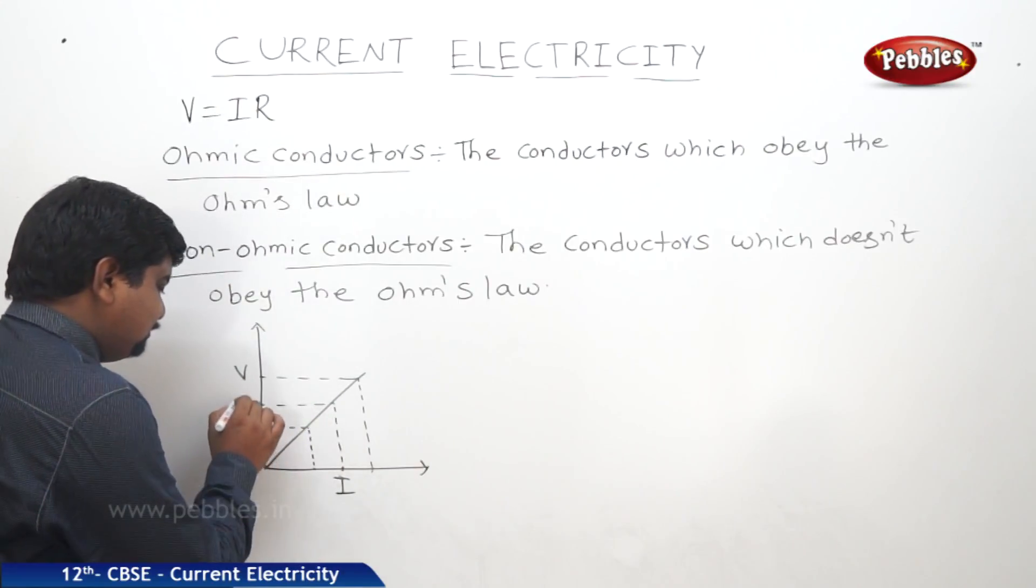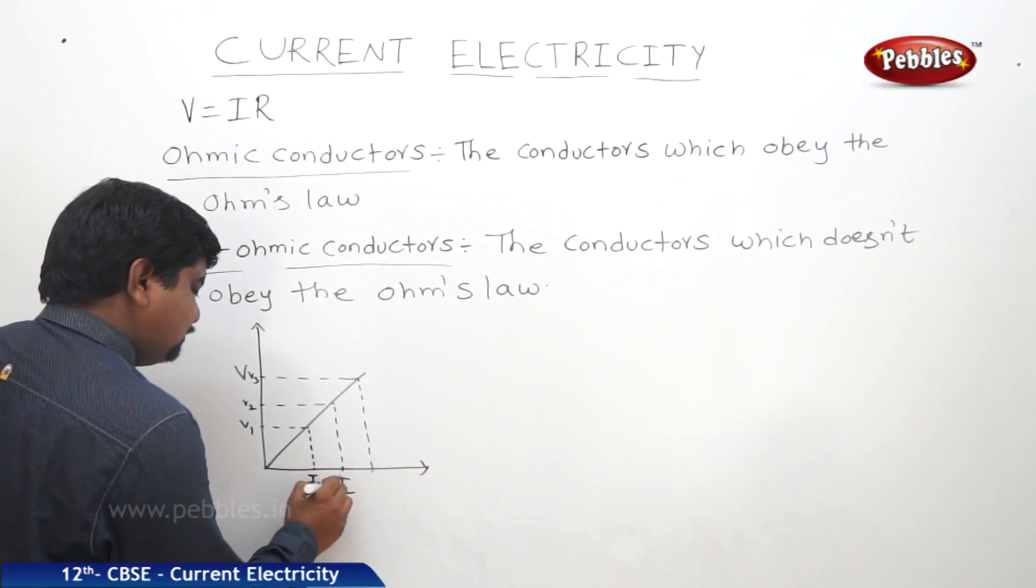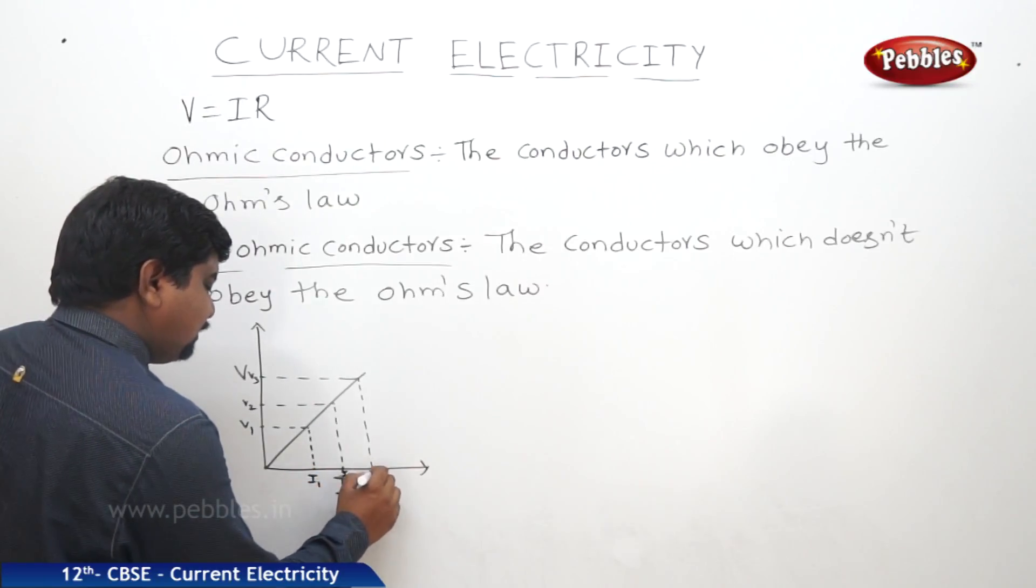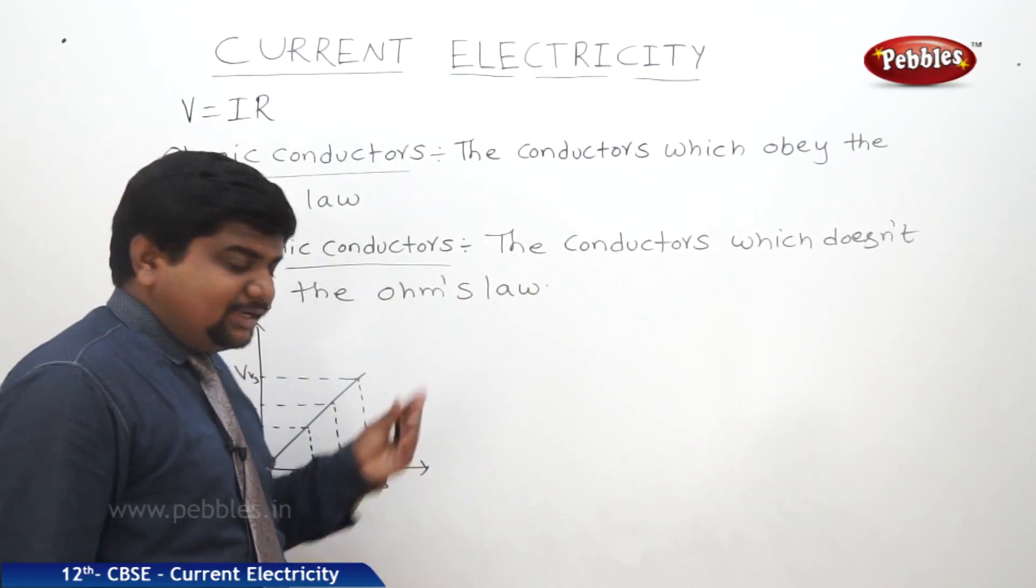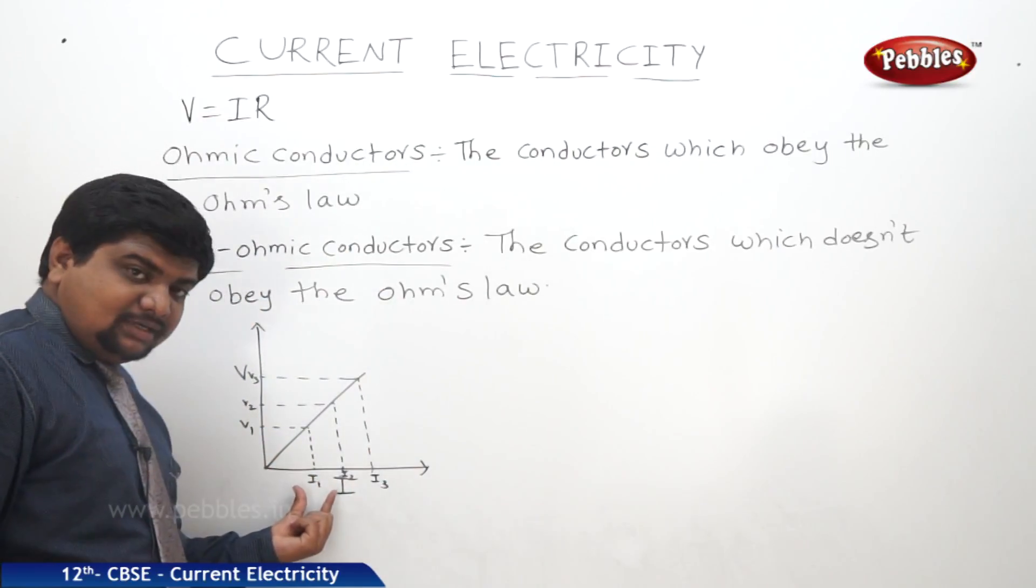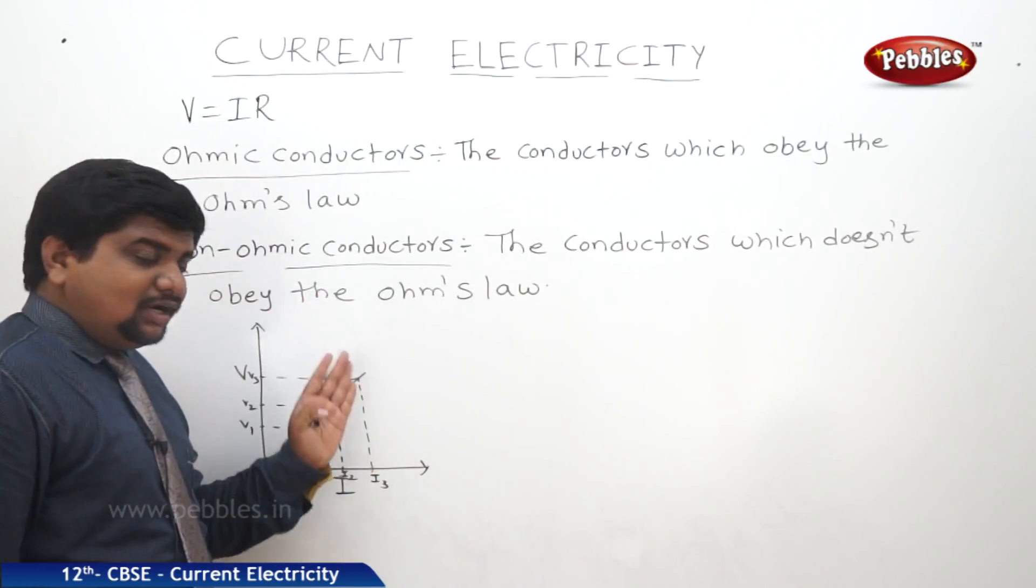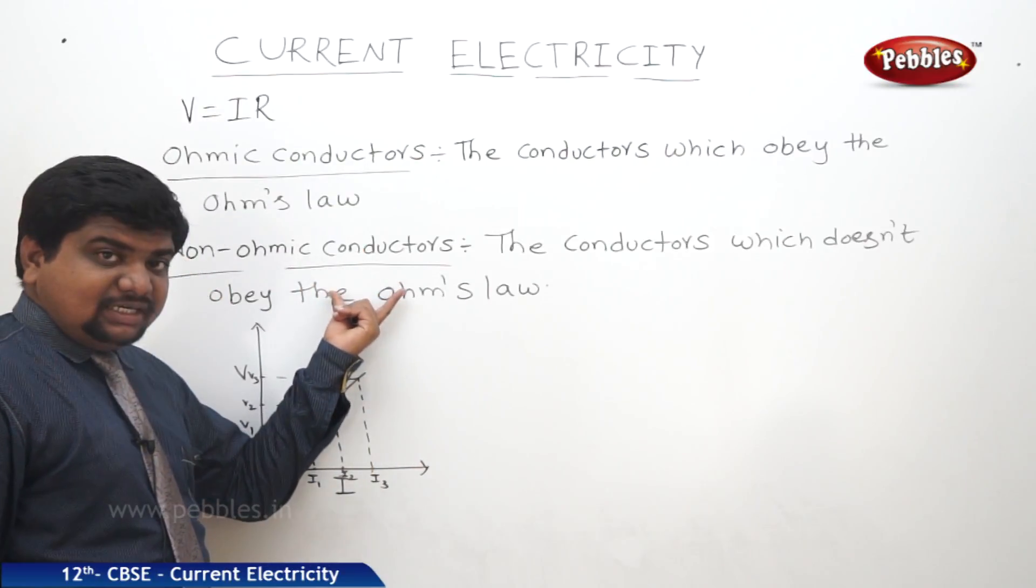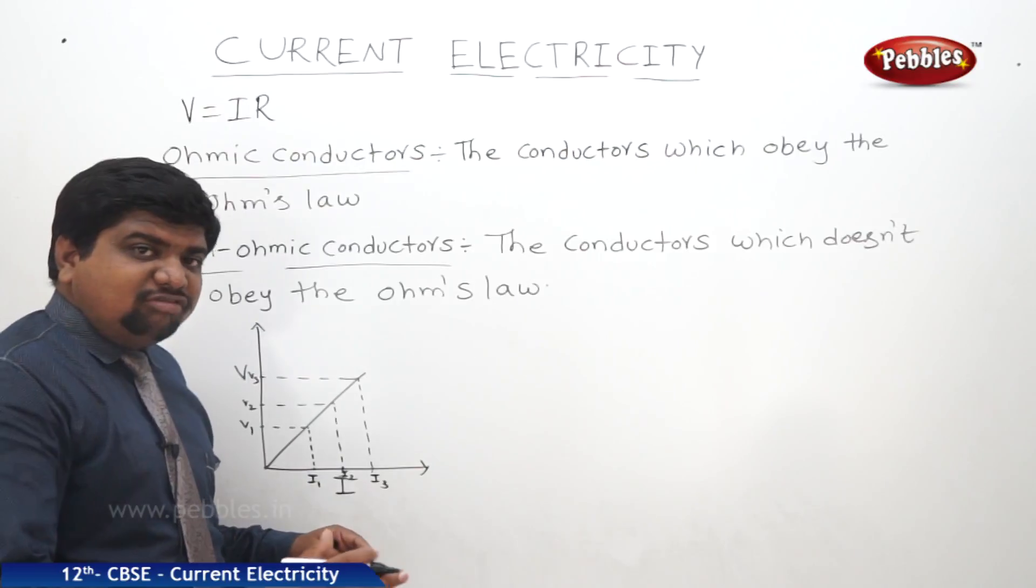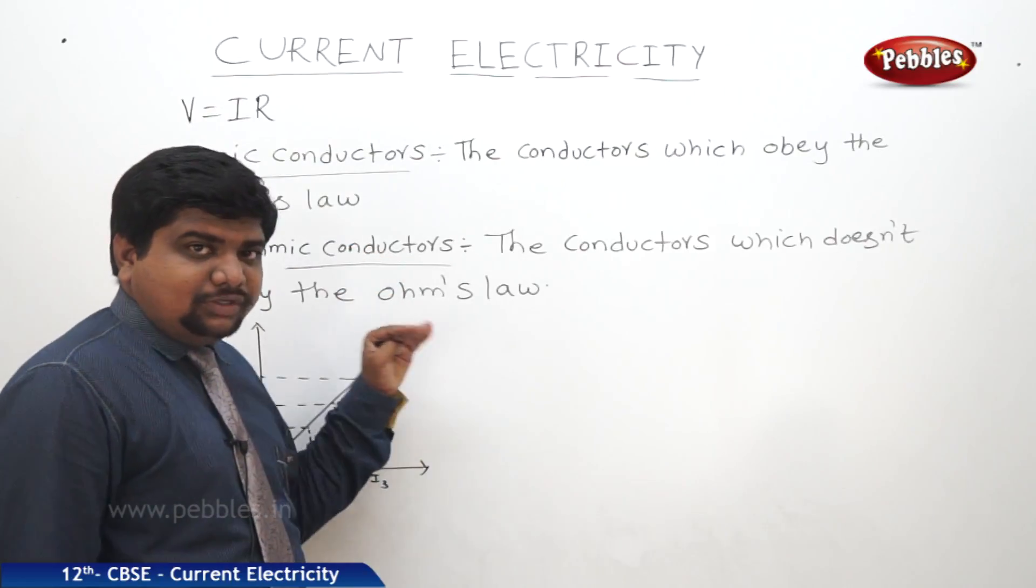We can say it as V1, V2, V3, I1, I2, I3. The slope of the graph gives the resistance of the material for the given voltage and corresponding current. If the graph is not like that, we can say it is not obeying the Ohm's law. Which materials are called as non-Ohmic conductors? What are the examples? And what will be the nature of the graphs in those cases? We are going to watch that.